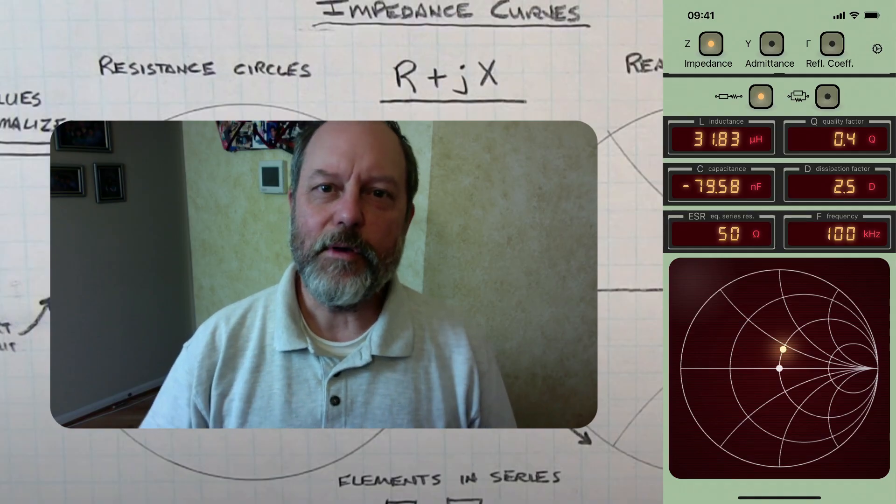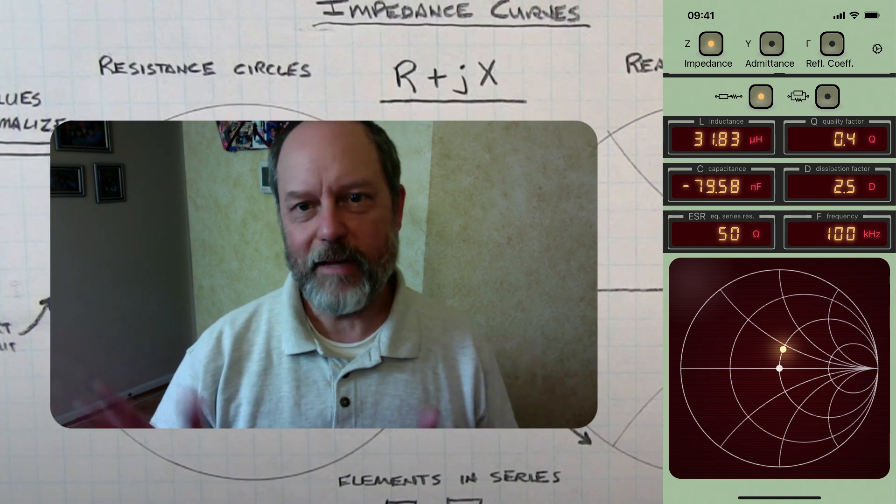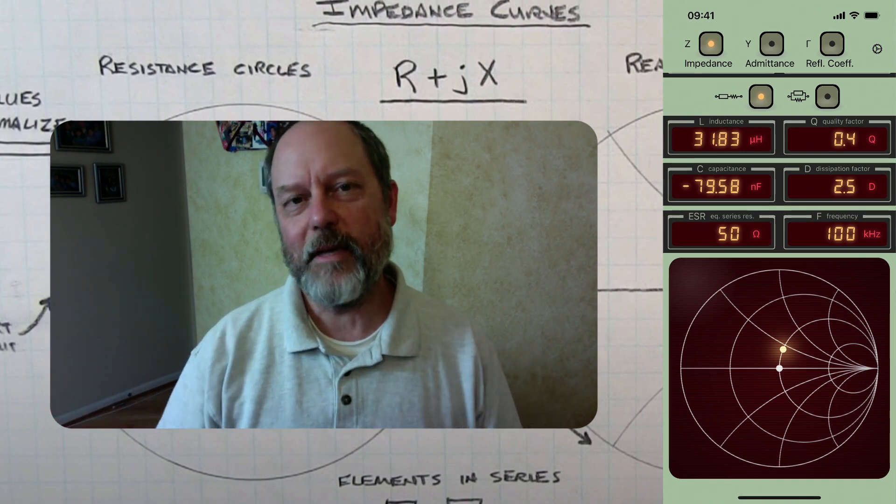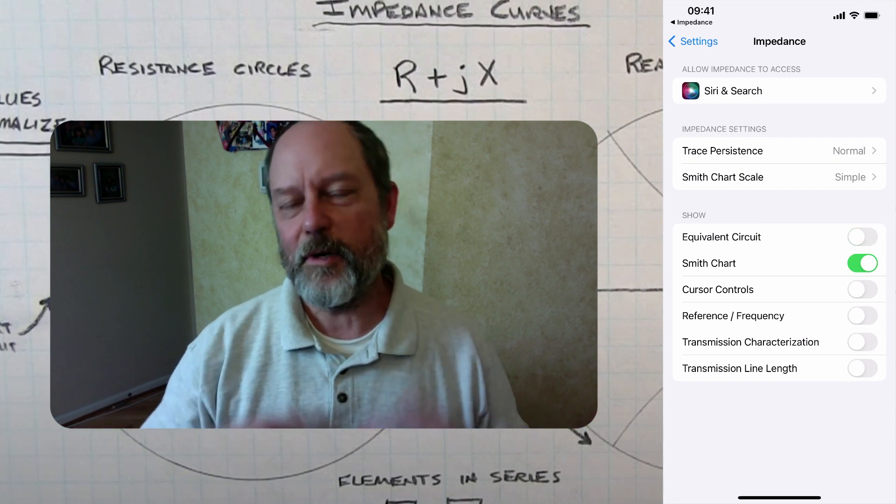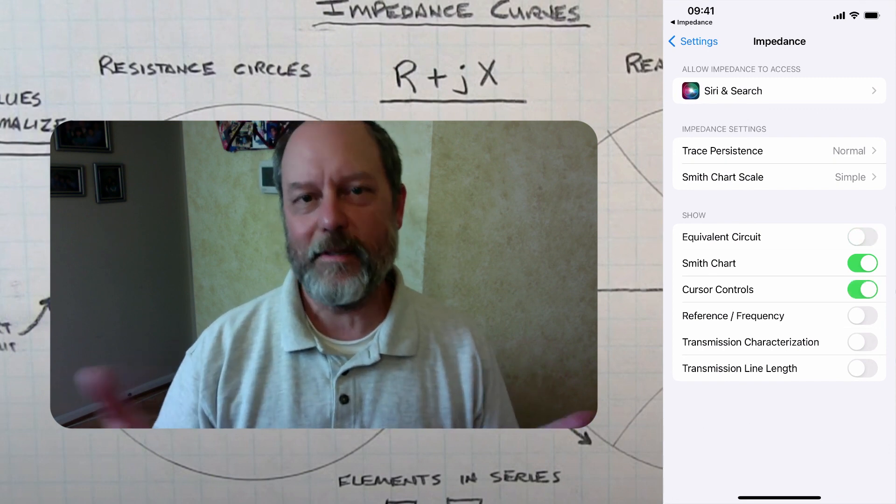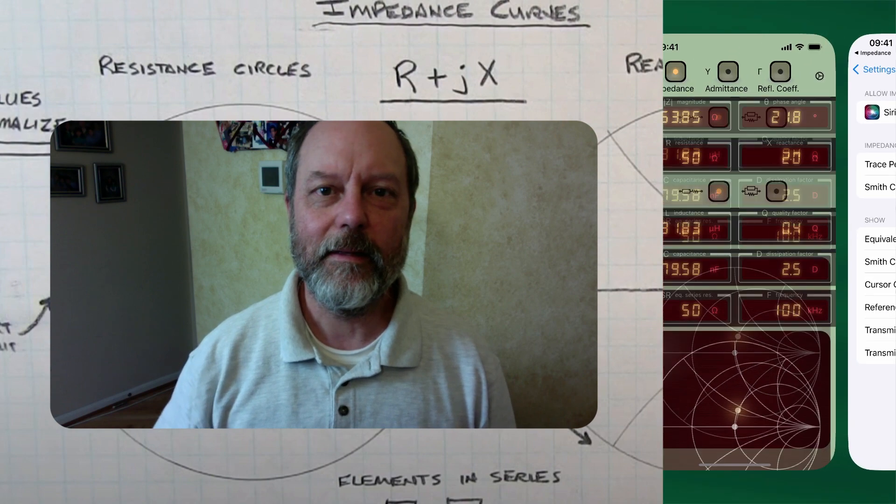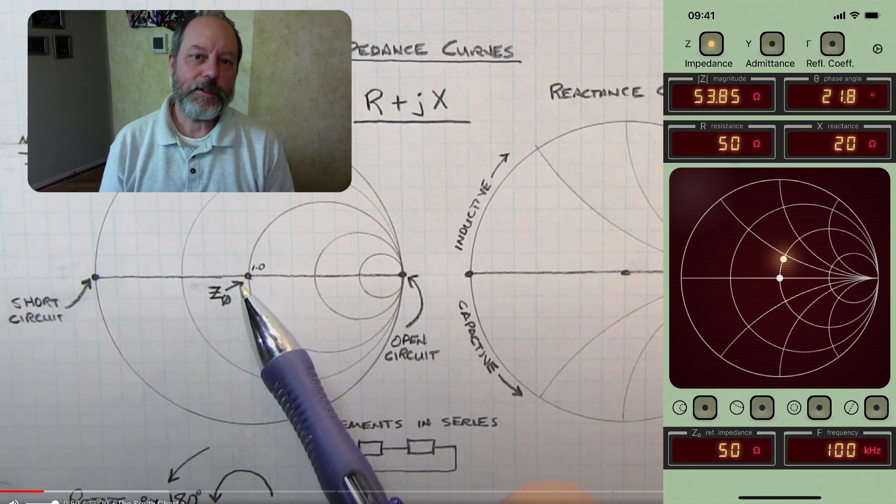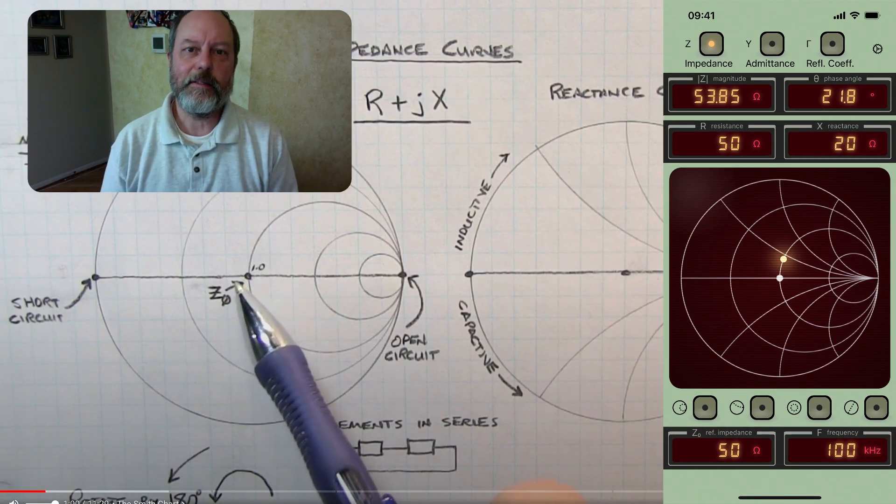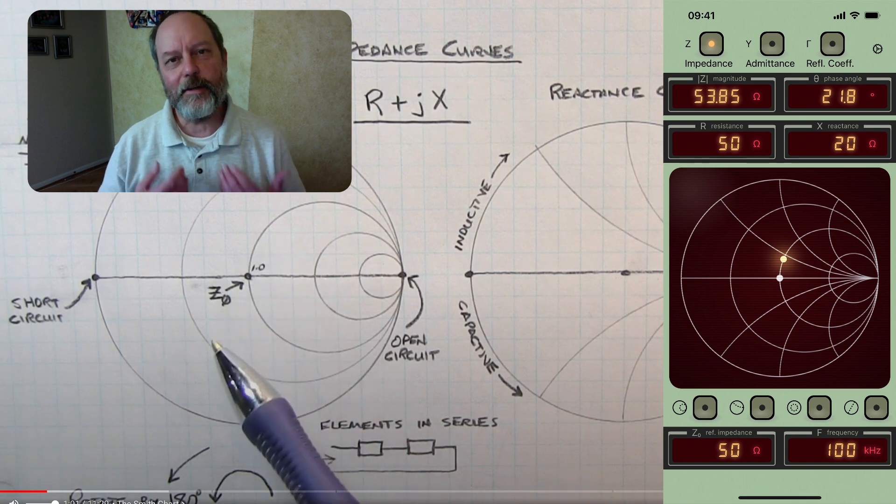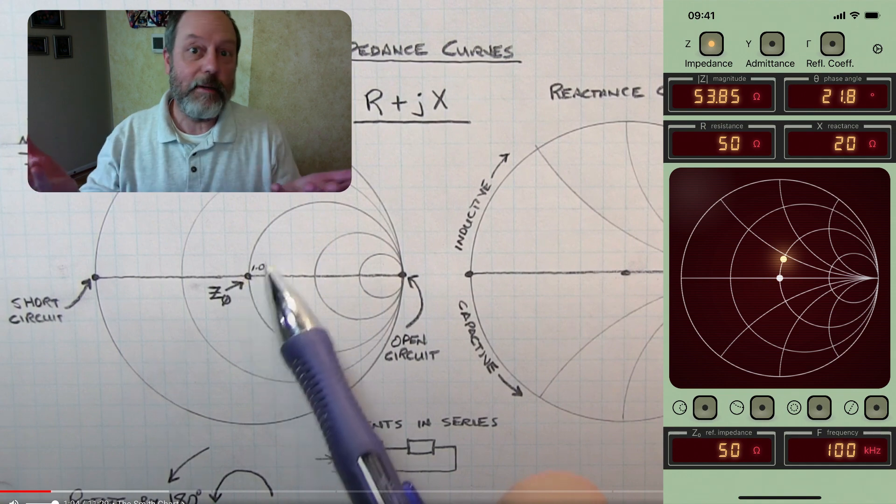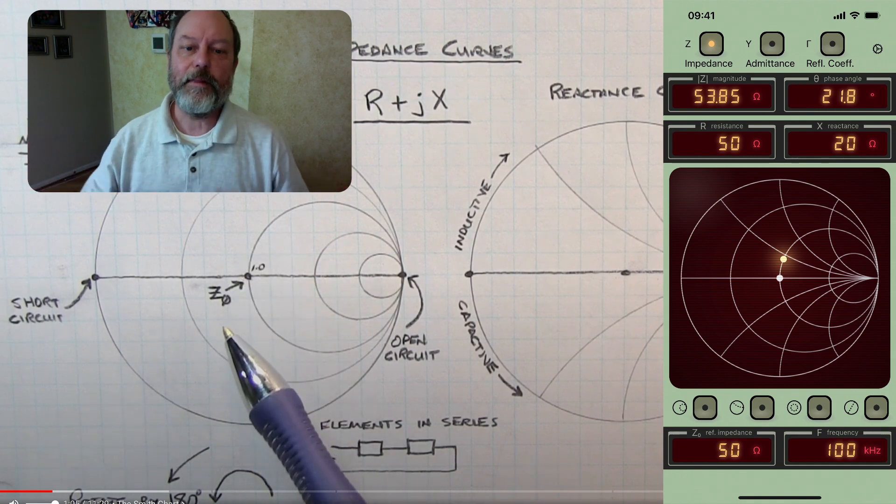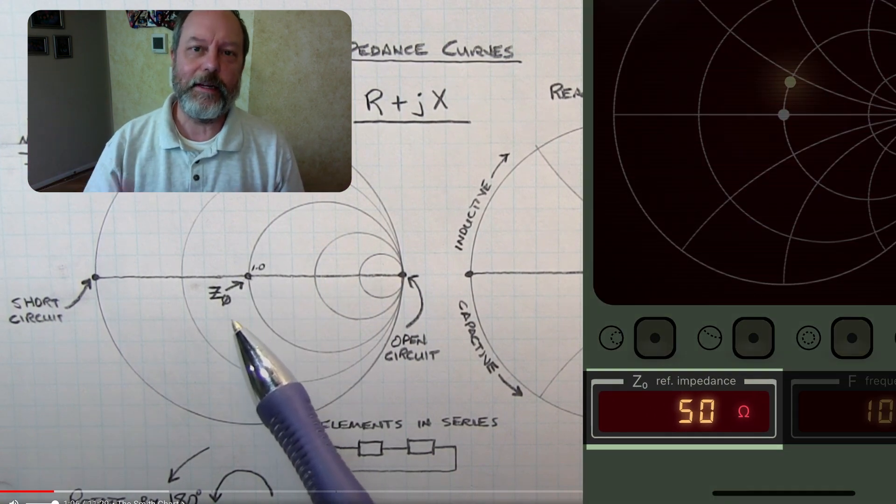So Impedance Converter has views that can be either enabled or disabled. The first thing we're going to do is go into settings and disable the equivalent circuit view and enable the cursor controls and the reference impedance view. Smith charts typically show normalized impedance, and Impedance Converter takes care of this for you by showing and plotting impedance values relative to a reference impedance of 50 ohms. But that value is configurable in this cell here.